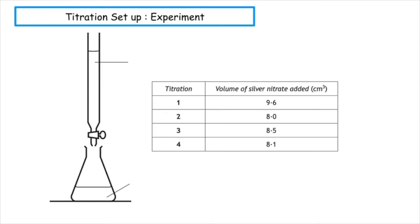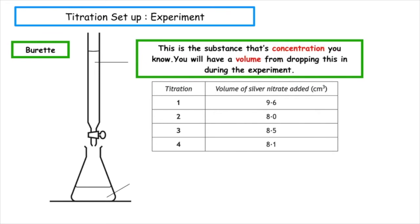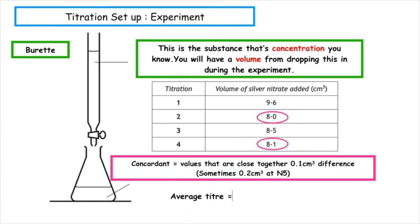Remember, from the titration setup, we know we have a burette, and in the burette is the substance whose concentration and volume we know. We repeat this experiment to get reliable results, doing multiple titrations. We want to obtain concordant results — values which are close together, usually with a 0.1 difference, sometimes 0.2 at National 5. Looking at titrations 1, 2, 3, and 4, the two volumes closest together are titration 2 and titration 4. The average titer is (8.0 + 8.1) ÷ 2 = 8.05 cm³.